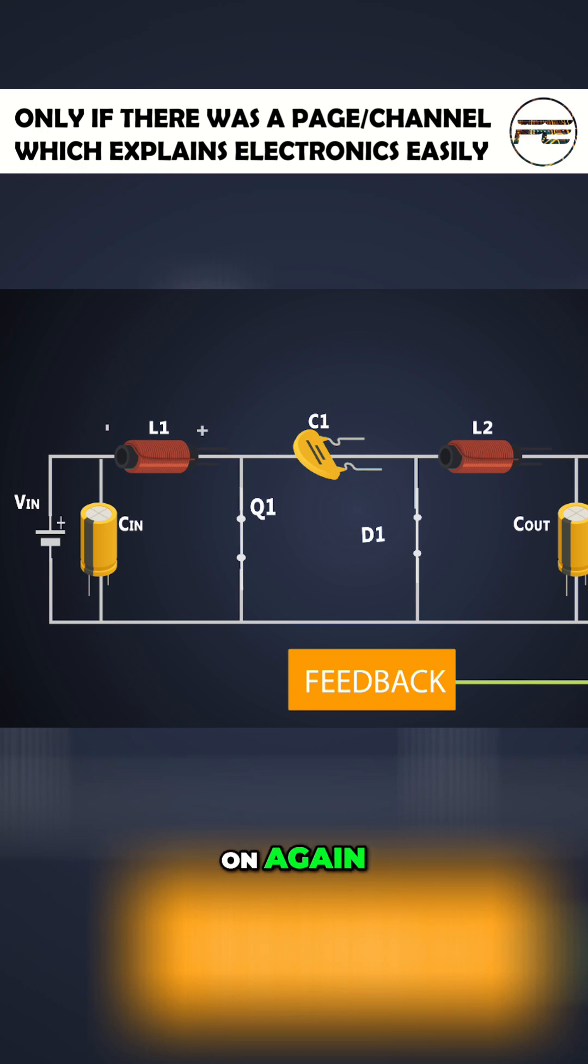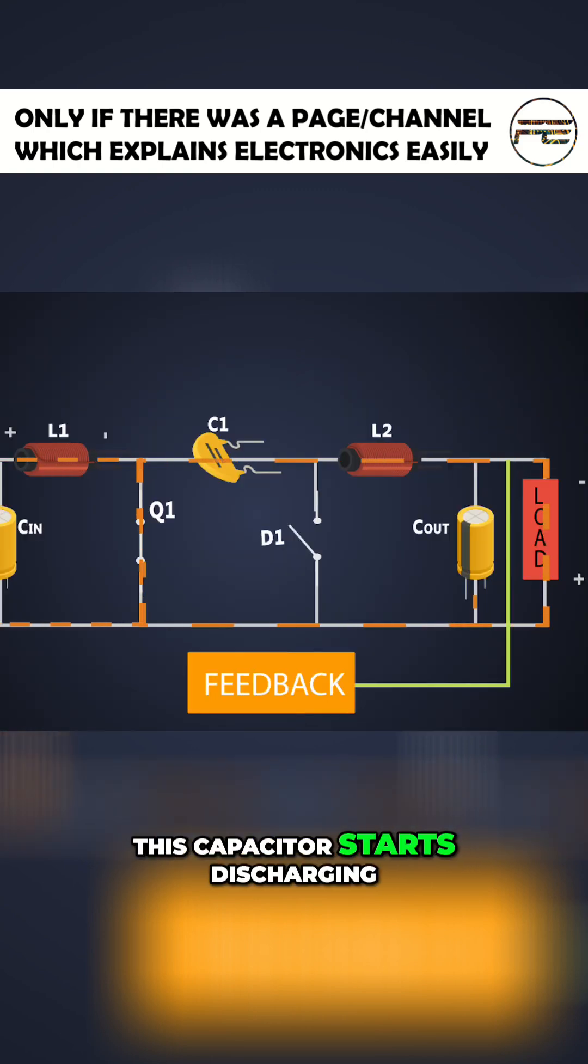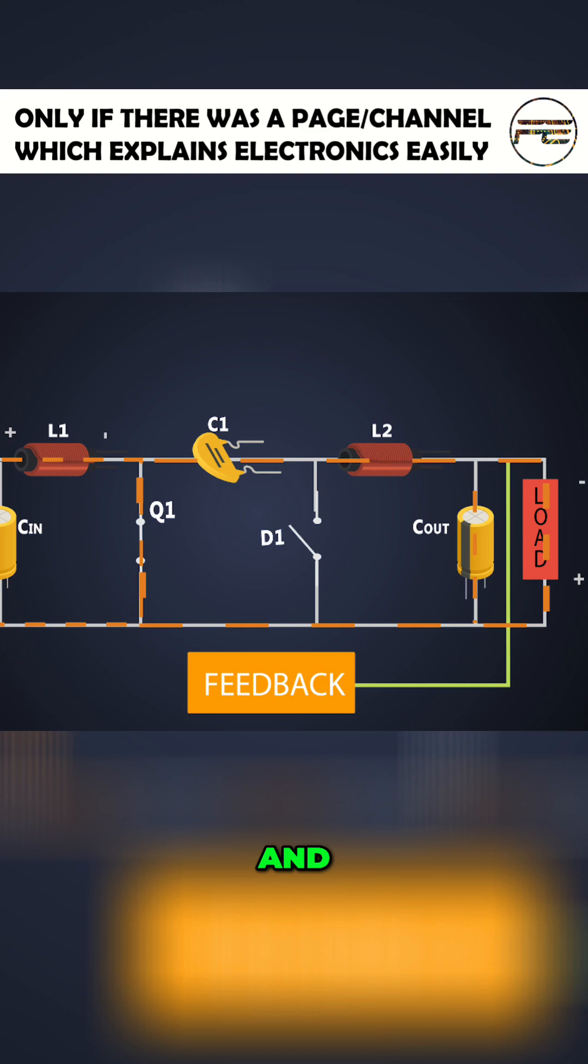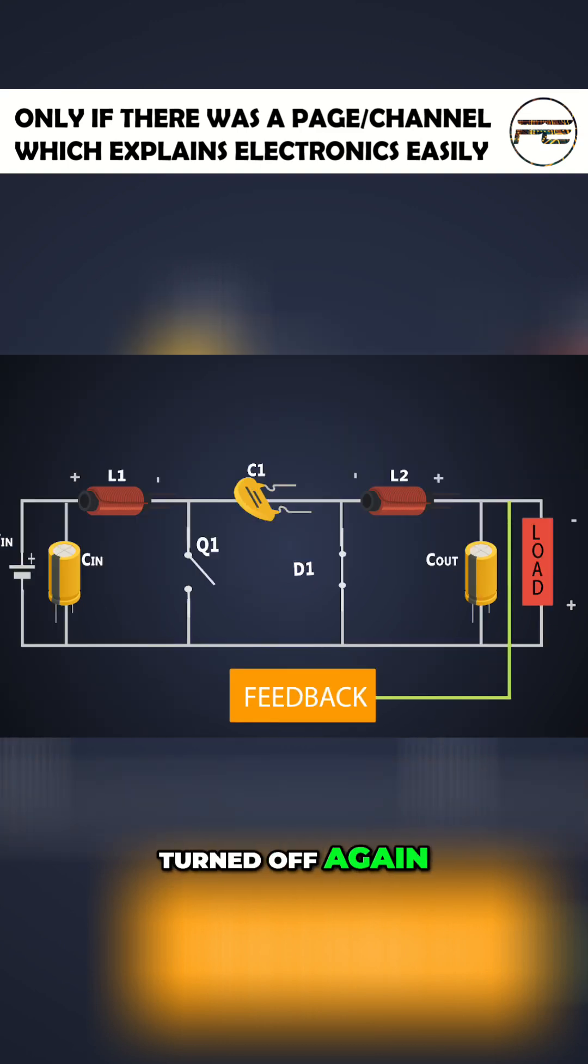Now, the MOSFET is turned on again. The inductor L1 starts charging. As the capacitor C1 is already charged, simultaneously, L2 stores the energy provided by the capacitor C1.